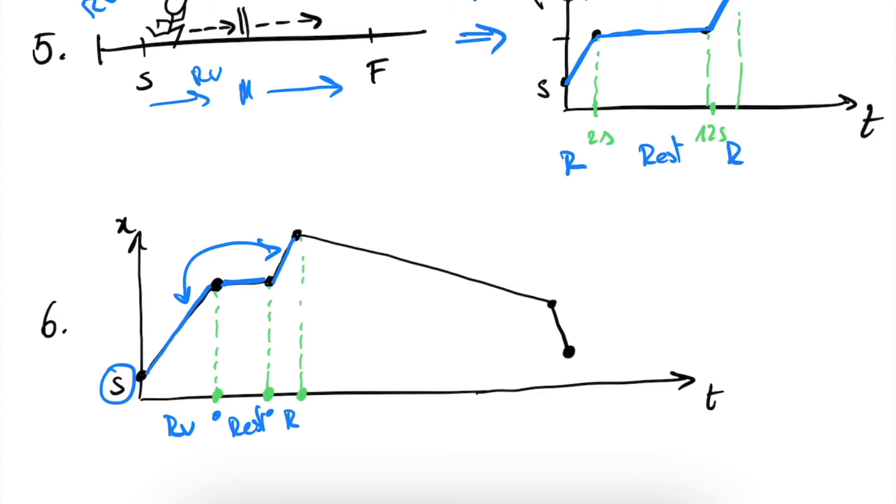So basically, up until now, we just have this graph, this scenario. We run, we pause, and we run.